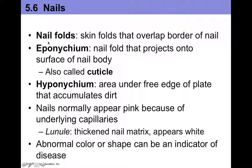The nail fold is a skin fold that overlaps the border of the nail on the edges, like the side. The eponychium is the nail fold that projects onto the surface of the nail body — we also call this the cuticle. This is the portion of epidermis found proximally on the nail that hangs over on the proximal surface of the nail itself.